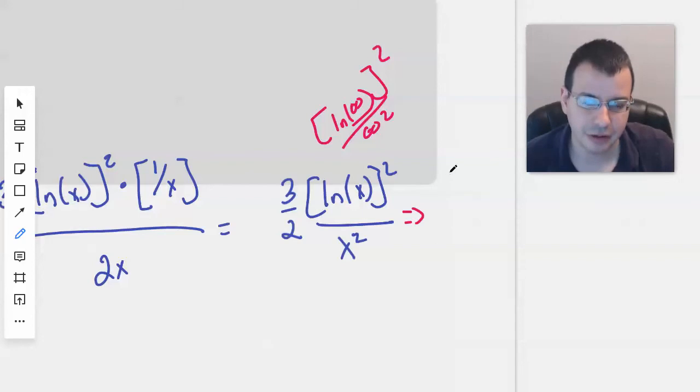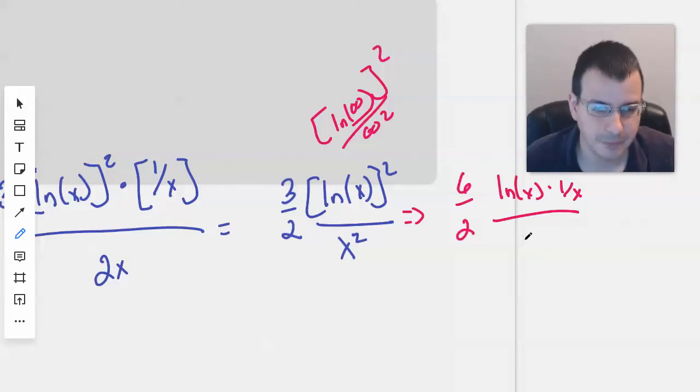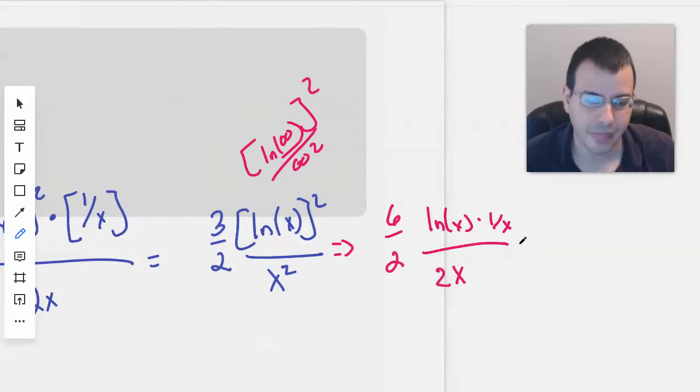We have 3 halves, which will now be 6 halves times natural log of x times the derivative interior, 1 over x, times 2x again, which will give us 6 fourths times natural log of x over x squared.